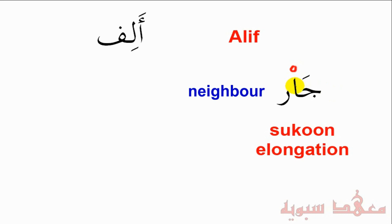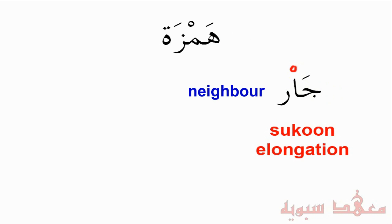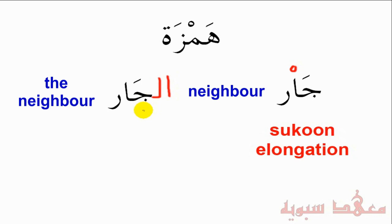Now let's talk about the Hamza. Let's take the same word, Jaar, and we'll add an Alif and Laam. This is what's known as Laam Ta'arif, or the Alif Laam of definiteness. When you add this to it, you make it definite — 'the neighbor.' Now if you notice, there's an Alif here. Remember we said that an Alif can never be at the beginning of a word, so you wouldn't be surprised to know that this is not actually an Alif — it's actually a Hamza.